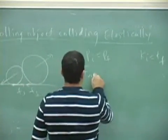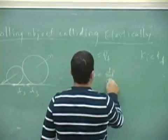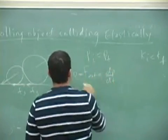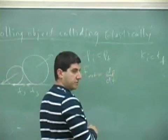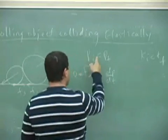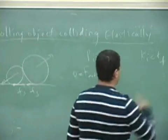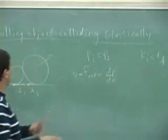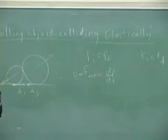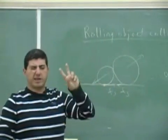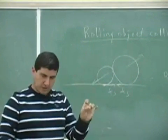F external equals dp dt. So if this is equal to zero, therefore the momentum is conserved. So momentum is conserved, but the angular momentum isn't. So all that to say, when you do this kind of problem, only conserve linear momentum and kinetic energy.